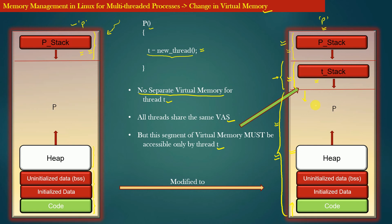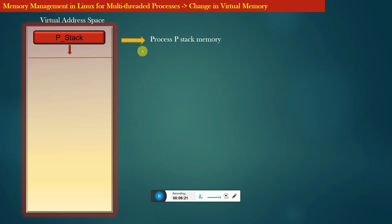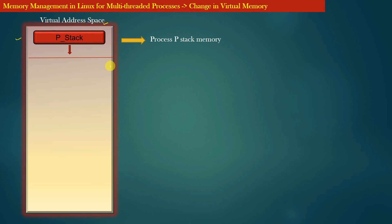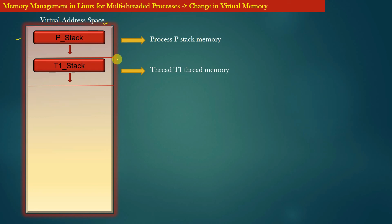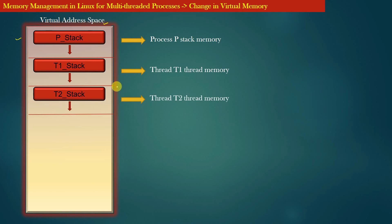Now let us extend this idea to a process P which creates more than one thread. The diagram on the left hand side represents the virtual address space of process P, where the topmost portion is being used as stack memory by the process. If process P creates a new thread T1, the operating system allocates more virtual memory to be used as stack memory for thread T1. Similarly, if process P creates another thread T2, the operating system allocates more virtual memory from the process virtual address space as stack memory for thread T2.